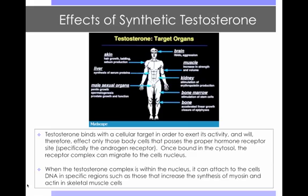Synthetic and natural testosterone binds with a cellular target in order to exert its activity, and will therefore affect only those body cells that possess the proper hormone receptor site, specifically androgenic receptors. Once bound in the cytosol, the receptor complex can migrate to the cell's nucleus. When the testosterone complex is within the nucleus, it can attach to the cell's DNA in specific regions to promote the expression of certain genes.